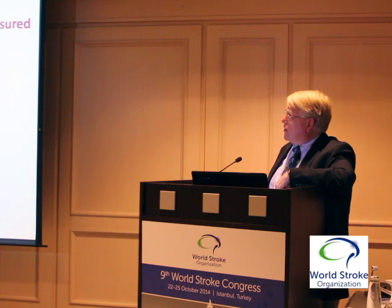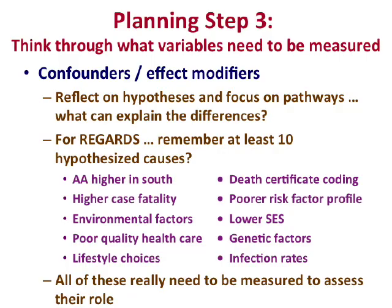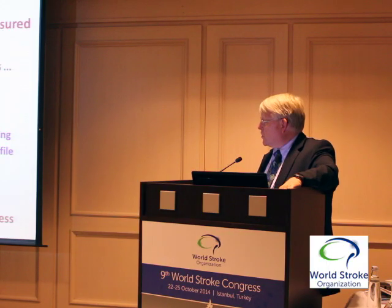For confounders and effect modifiers, reflect on your hypotheses and pathways. You need data to investigate each potential pathway. For example, if 'poor quality of healthcare' is a hypothesized pathway, you need measures of regional healthcare quality for each participant. If you don't measure things in the pathways first, you won't be able to assess their role in the link between exposures and outcomes.